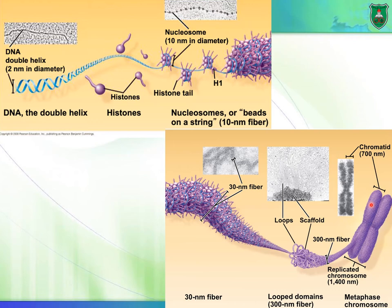Pay attention to the terms: euchromatin is when DNA is relaxed and this is where active genes are expressed. Heterochromatin has a more condensed structure where genes are silent because DNA is not accessible.